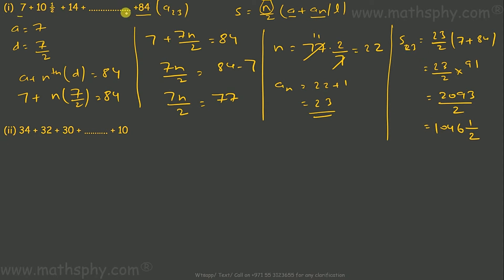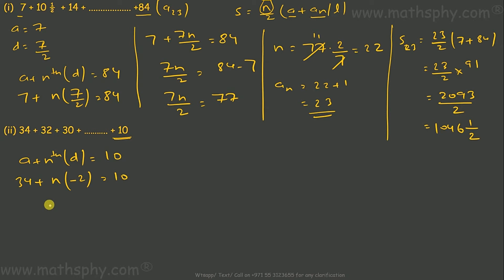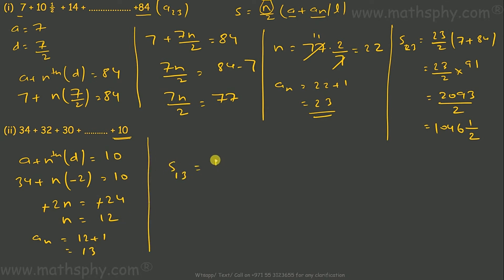For the second series, the last term is 10 and we need to find which term it is. Using a + (n-1)d = 10, where a = 34 and d = 32 - 34 = -2: 34 + (-2)n = 10, so -2n = -24, giving n = 12. Therefore the term index is 12 + 1 = 13, meaning it has 13 terms. The sum up to 13 terms is S = n/2 × (a + last term).